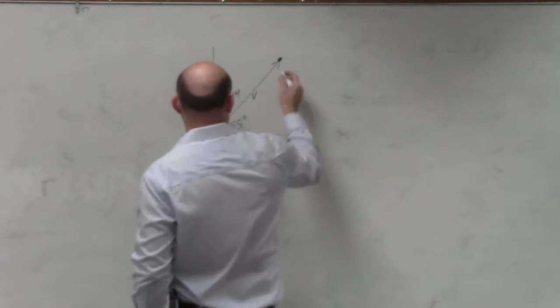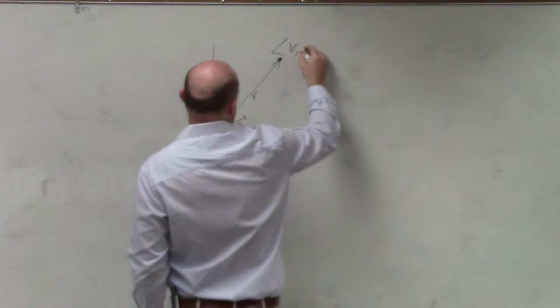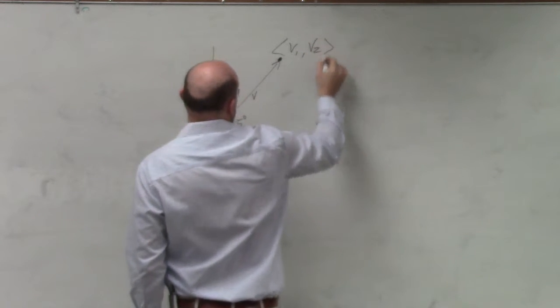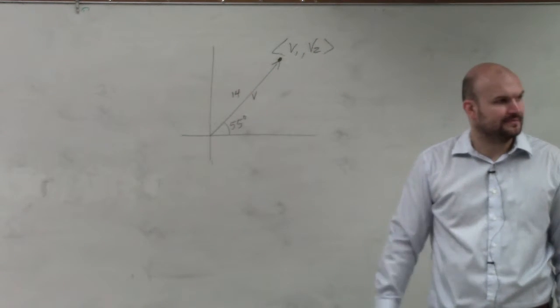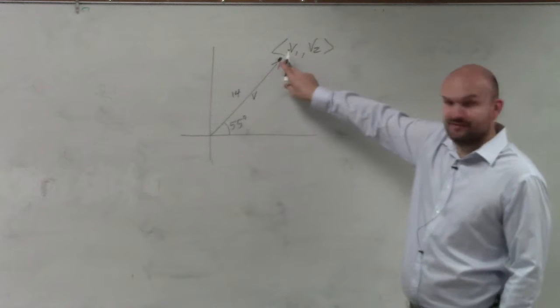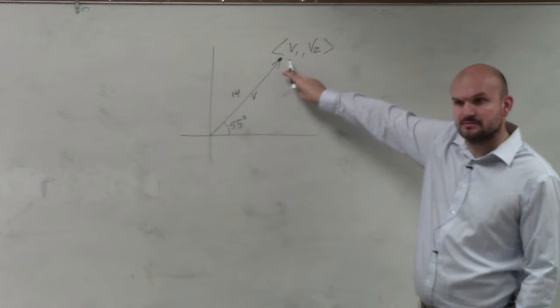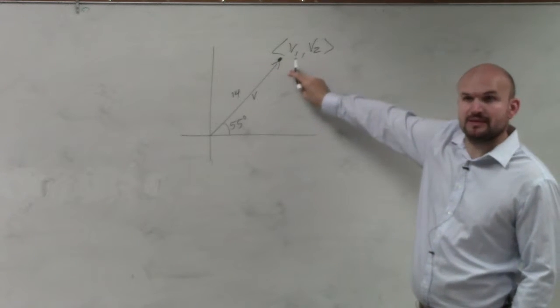But they don't want vector v. They want vector v written like this. They want it in component form. So that means we need to figure out what that point is, right? Do you guys agree? We need to figure out what that point is.